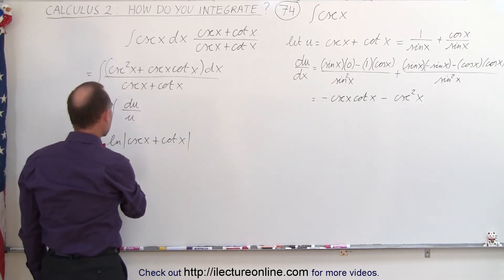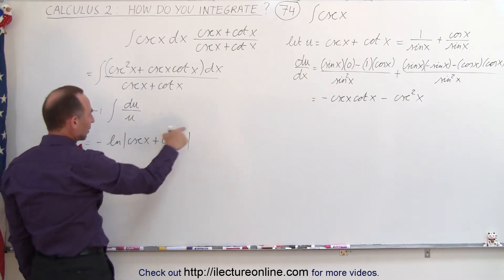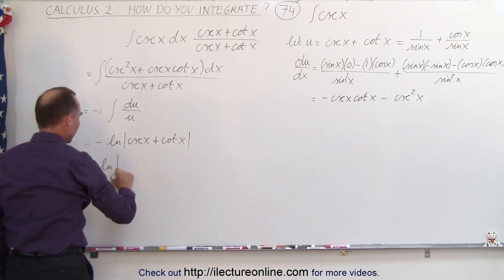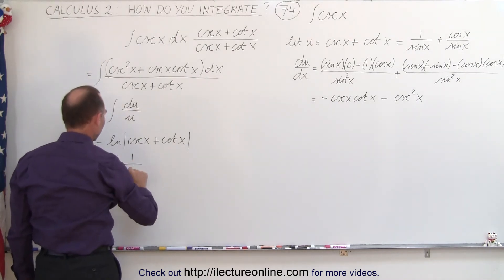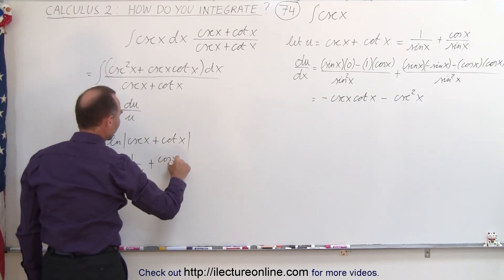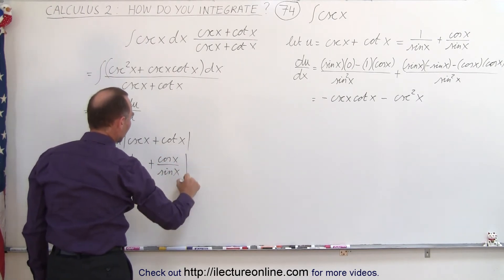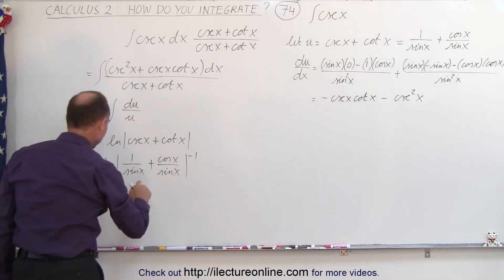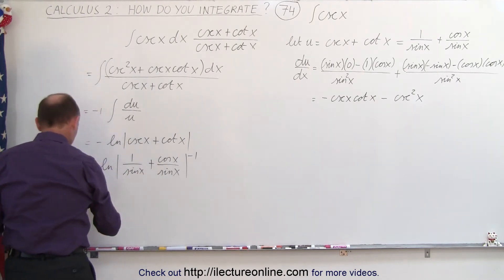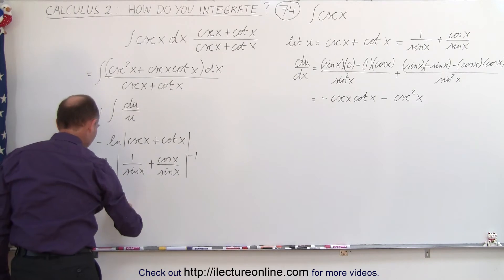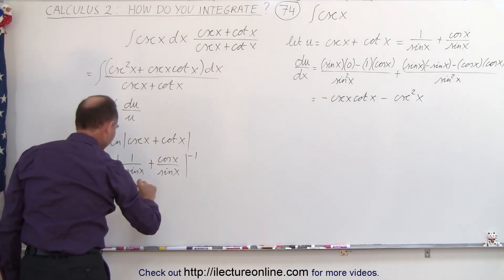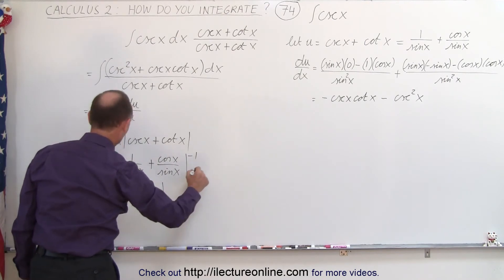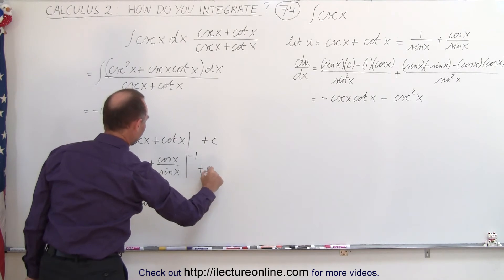So now all we have to do is integrate this, so this becomes equal to negative times the natural log of the cosecant of x plus the cotangent of x. And then, if we want to get rid of this negative sign, we can put the negative sign up here and rewrite this, so this could be written as the natural log of 1 over sine of x plus cosine of x over sine of x. Notice that both denominators are the same, which means we can flip what's inside the brackets, so this equals the natural log of sine of x divided by 1 plus cosine of x, plus the constant of integration.